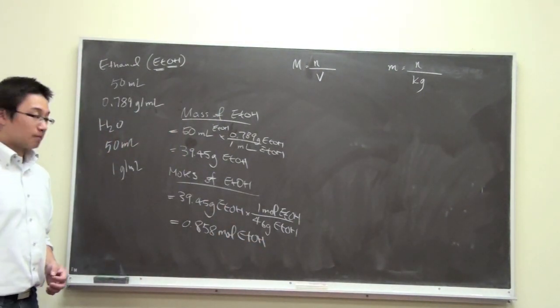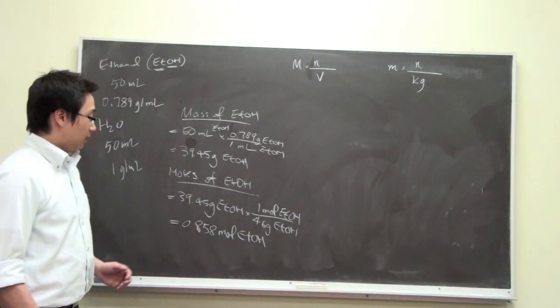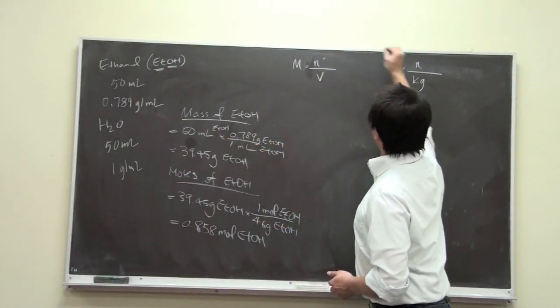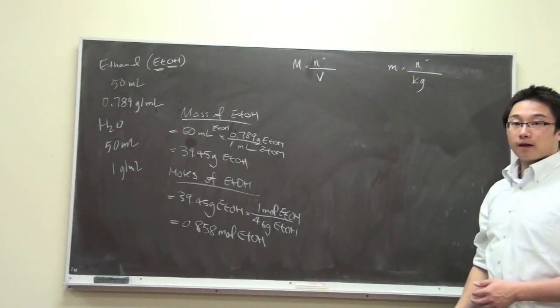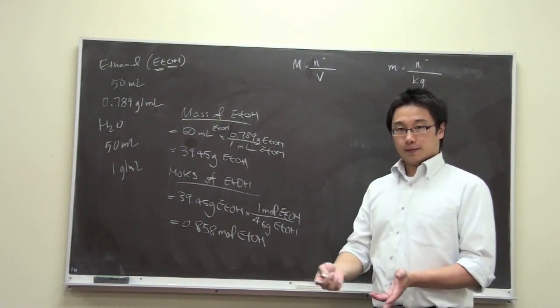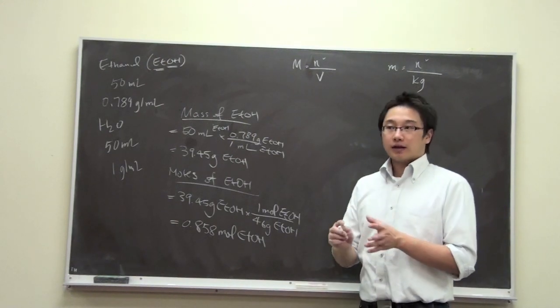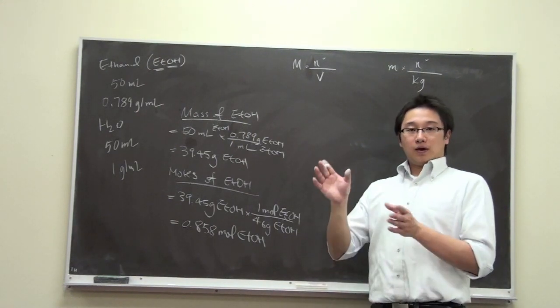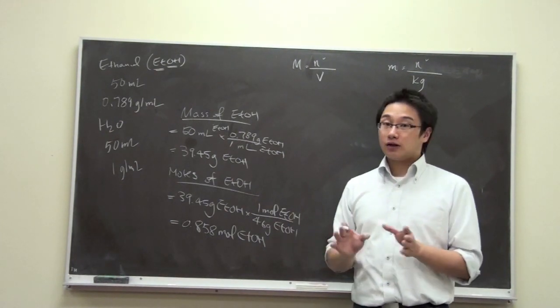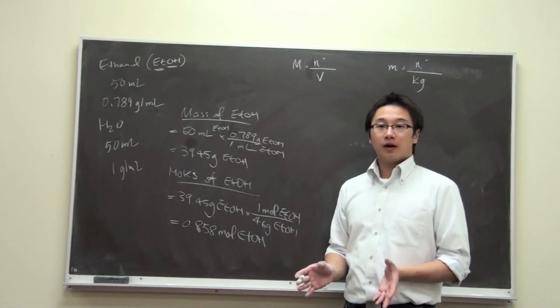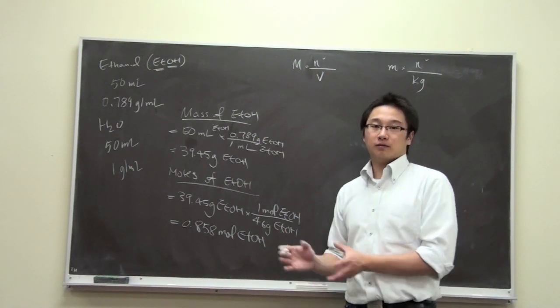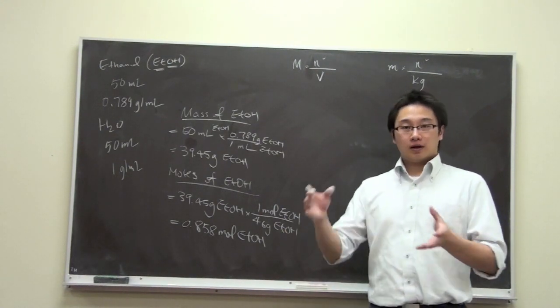And now we have this number to put in here and here. Now what about the volume? It's very interesting that when you have 50 ml of ethanol added to 50 ml of water, they don't equal to 100 ml, and it's because of the interaction between the water molecules and the ethanol molecules and the volume becomes smaller.